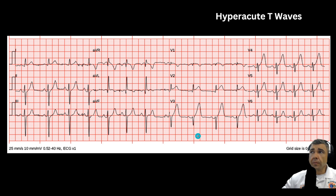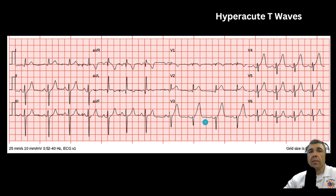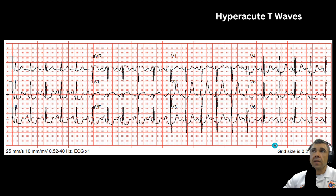Here's another example where the T-wave height really stands out because the QRS complexes aren't as big, and you still get nice, tall, symmetrical T-waves before the elevation occurs. This is early in the MI, which is good in a sense — the earlier you identify an MI and treat correctly, the more myocardium — the more heart muscle — you're going to save. The whole idea is to keep that tissue from becoming necrotic, which is irreversible damage.